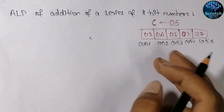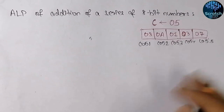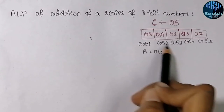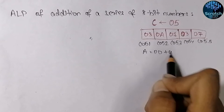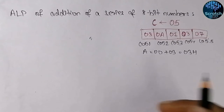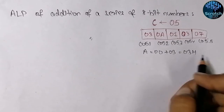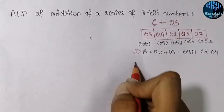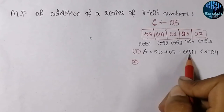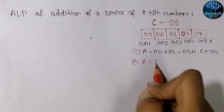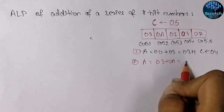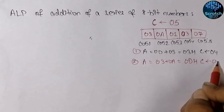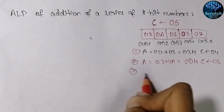All operations are performed in the accumulator, so we initialize the accumulator with 00. Then we take the first input and add it with the accumulator to get 03 hex. Side by side we decrement the value of C from 5 to 4. In the next step the content of accumulator is added with the second data: 03 plus 0A equals 0D, and C is decremented to 03 hex.